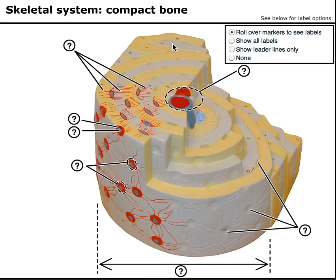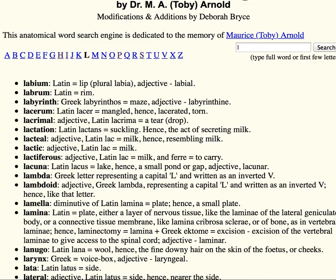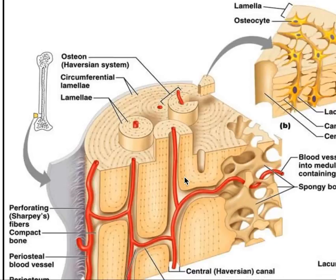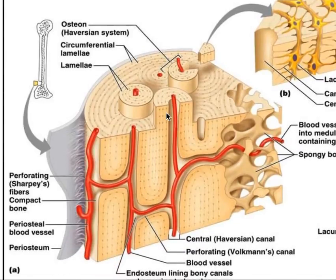Number six is indicating what are called interstitial lamellae. Interstitial literally means between, so these are the plates between the osteons. There's a third type of lamellae — the circumferential lamellae — and it goes around the outside of the entire shaft of the bone. You'll have to zoom out to see this one, but that kind of closes the book on lamellae.